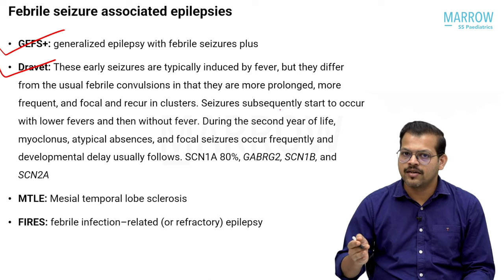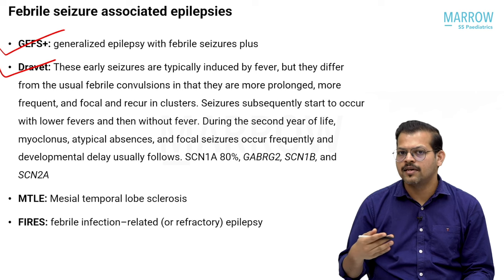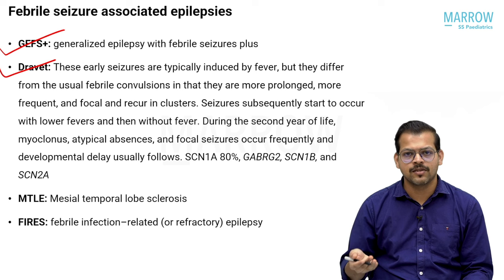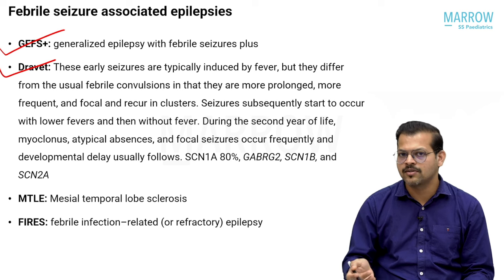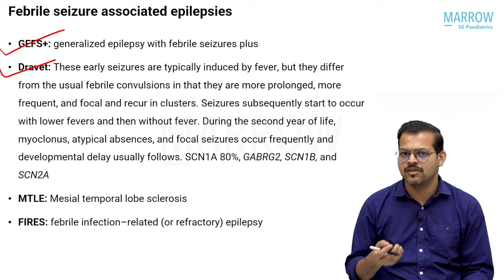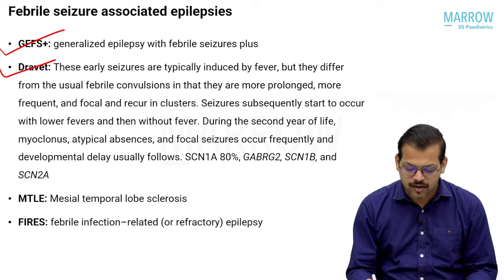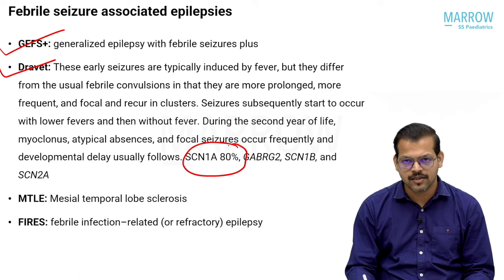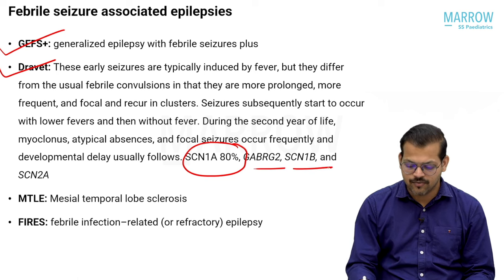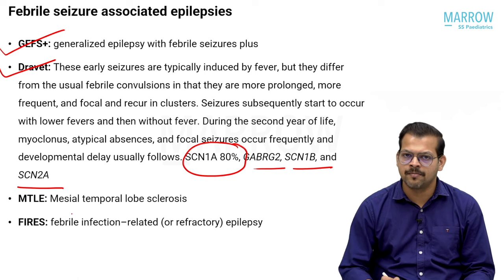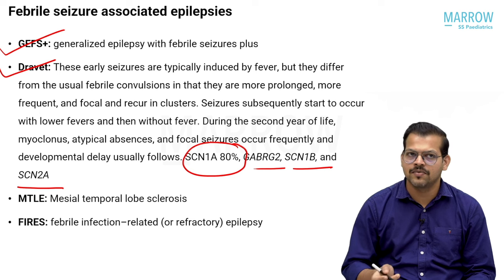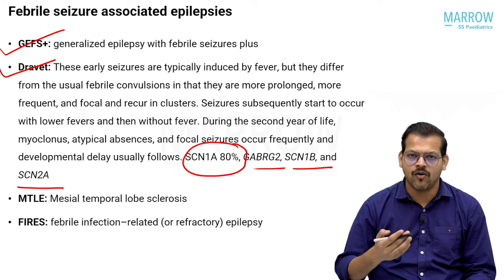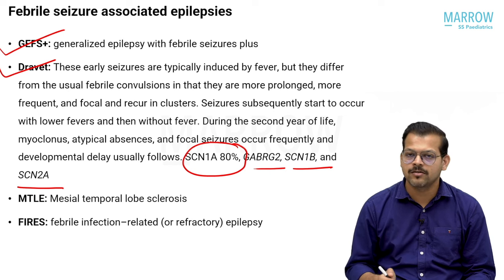In Dravet syndrome, seizures initially recur with fever up to about one year, then seizures also occur without fever, and other seizure types like myoclonic seizures develop — which is why Dravet syndrome was previously called SME (Severe Myoclonic Epilepsy of Infancy). The most important mutation is SCN1A, seen in about 80 percent of cases; other genes involved include GABRG2, SCN1B, and SCN2A. MTLE (mesial temporal lobe sclerosis) is a controversial entity; many investigators suggest that recurrent or prolonged febrile seizures may predispose to mesial temporal sclerosis later in life.